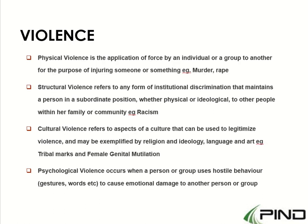There are four different types of violence. The first is physical violence — where there is application of force by an individual or group to another for the purpose of injuring the other party. Examples include murder, injury, and rape. Because there is application of force by an individual or group to another party, that is classified as physical violence.